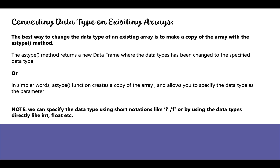In simpler words, the astype function creates a copy of the array and allows you to specify the data type as a parameter. Please note that we can specify the data type using short notations like 'i' for integer, 'f' for float, or by using the data types directly like 'int' for integer, 'float' for float, etc. Now let's see an example.